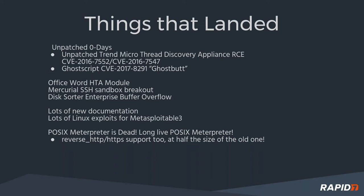We also have a few other things that landed this week. One was the Microsoft Office Word HTA module, which effectively allows you to run code within Microsoft Office without macros enabled — really awesome. Microsoft patched it about 90 days ago but it's still going to be out there for a long time. There's also a nice Mercurial SSH sandbox breakout — because Mercurial lets you use SSH as a transport — which lets you break out of the sandbox and get a remote shell on the Mercurial server.